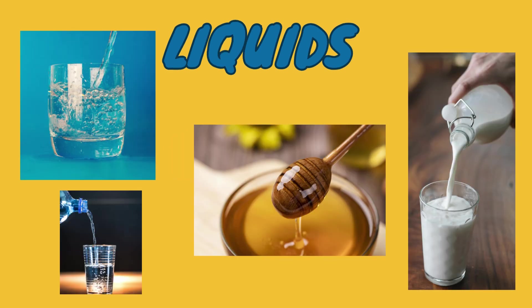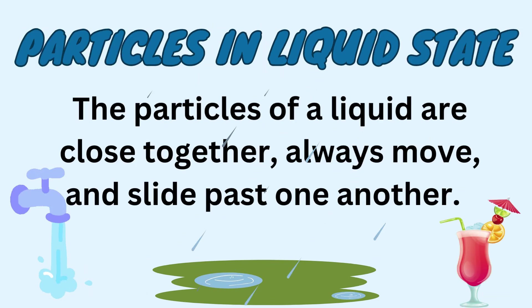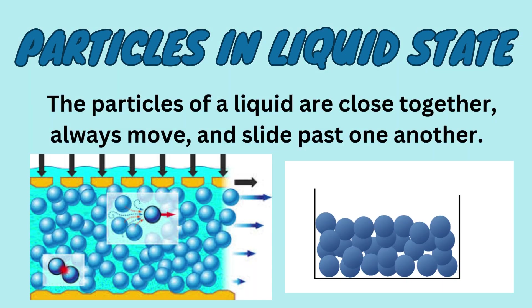What is liquid? What are the properties of this state of matter? Liquids are different from solids. Liquids do not have a fixed shape like solids — they take the shape of the container they are in, but they have a fixed volume. The particles of a liquid are close together but are loosely bonded compared to solids. They always move and slide past one another. This is the reason liquids don't have a fixed shape, but take the shape of a container.